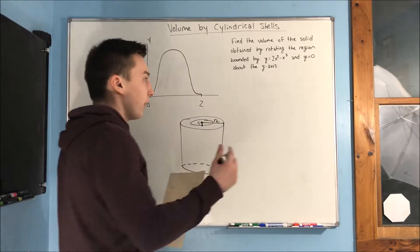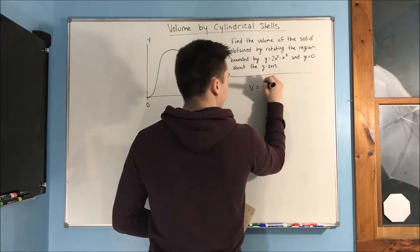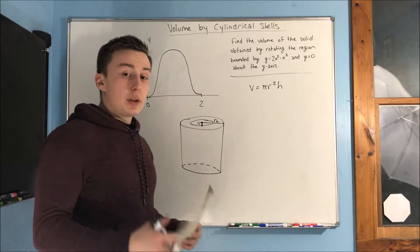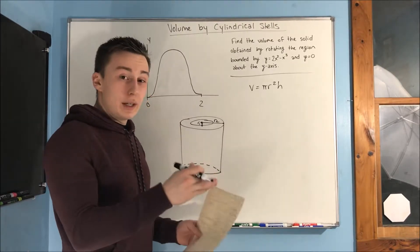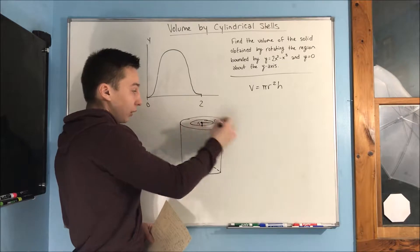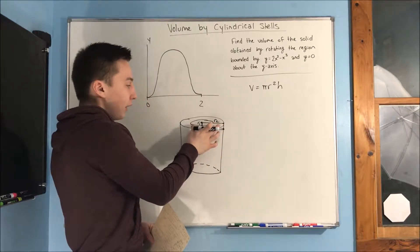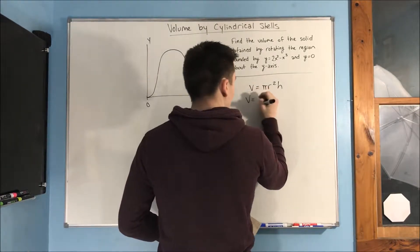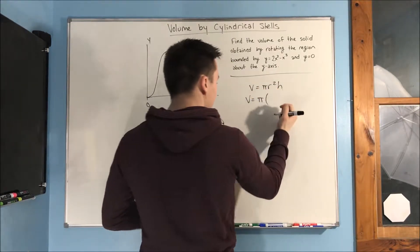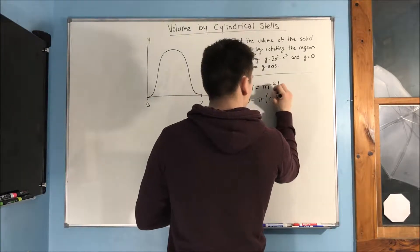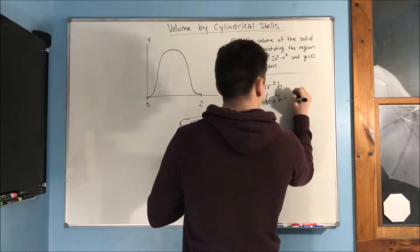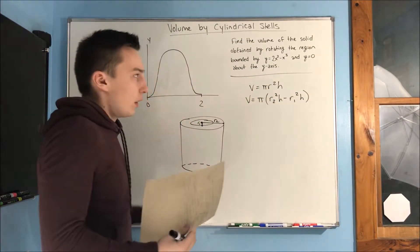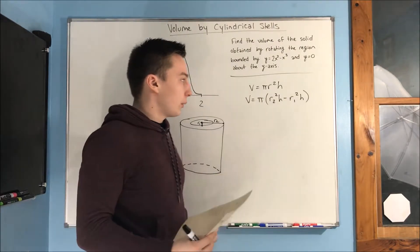Now, how would we find the volume of this cylinder? Well, let's start off with the volume equation for a cylinder, and that's pi r squared h. Now we need to do something similar to when we did washer method, when we had to subtract two radii to find the actual volume of the outer piece here, because remember, the inner piece is hollow. So, if we have to do that, we would get pi r2 squared h minus r1 squared h. Right? So, we just had to separate those radii.